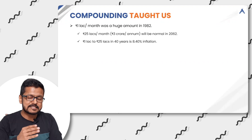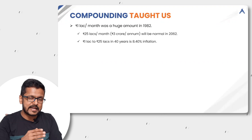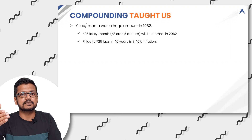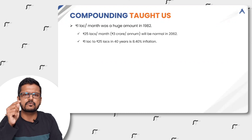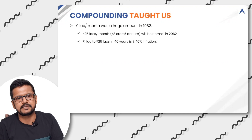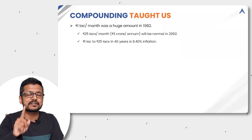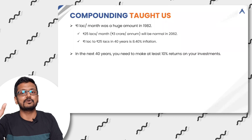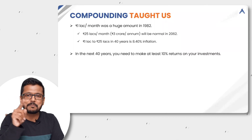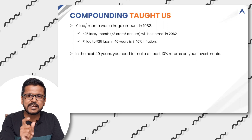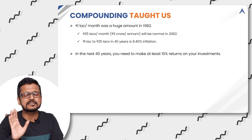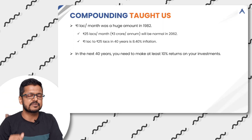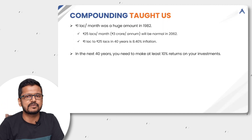If your expenses are growing from 1 lakh rupees per month today to 25 lakh rupees per month in the next 40 years, do the simple math. This is an inflation of 8.4%, which means you need to make returns of not just 8.4% — 10% or more — because after paying taxes you should have 8.4% returns in hand so that you are at par with inflation, not even beating it.